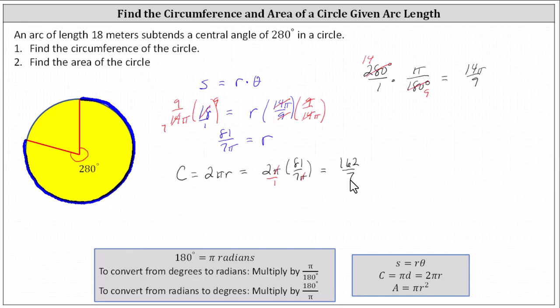Because the arc length is in meters, so is the circumference. The decimal approximation here is 23.14 meters, but we should not round unless we're told to. The exact circumference is 162 divided by seven meters.